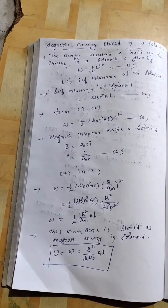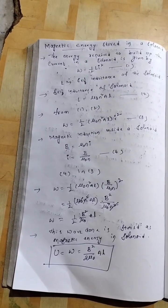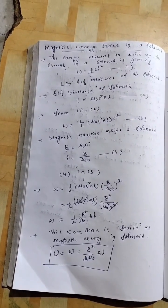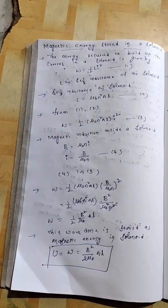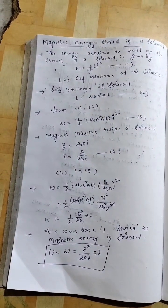So, in place of l, half mu0 n square al, we substituted i square. As usual, we wrote i square. Put it as equation 3.